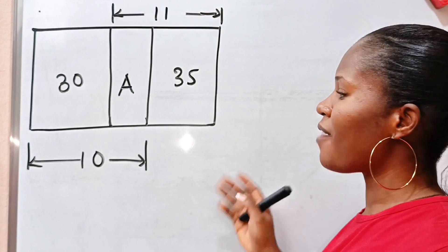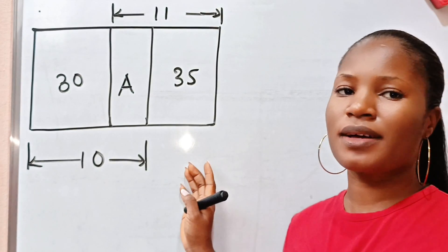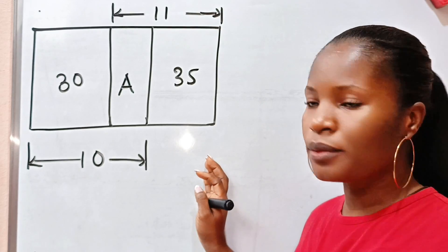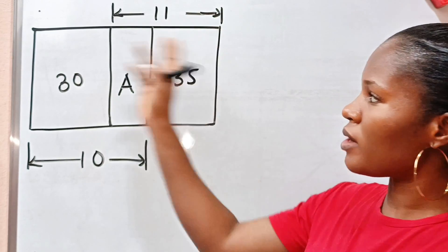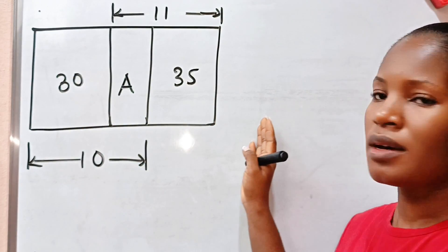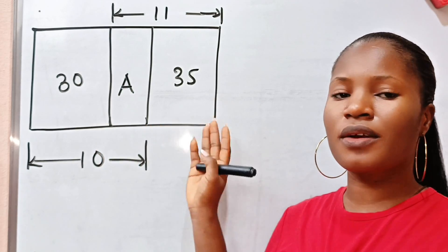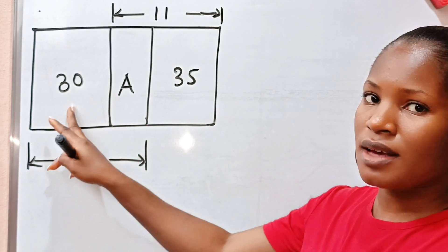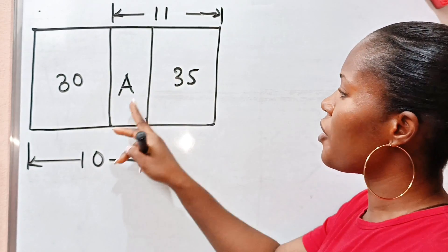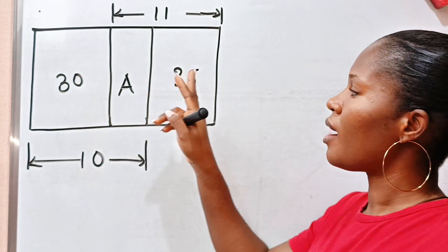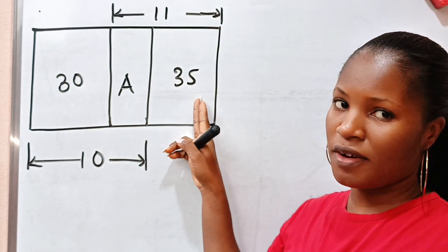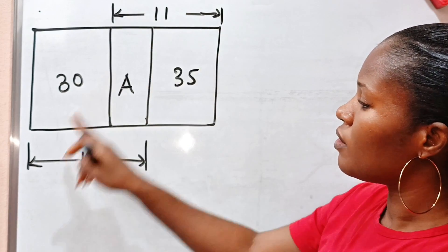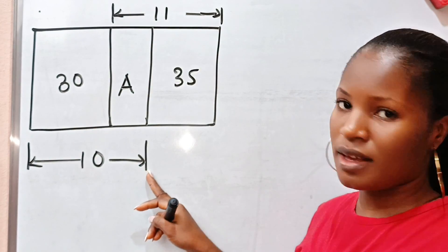Hi, amazing friends. We have an amazing math question to solve. Please, this is not drawn to scale. We have a rectangle and it's divided into three sections. This has area 30, the area of this side is A, and the area of this side is 35. The length from here to here is 11, and from here to here is 10.